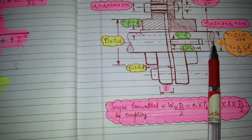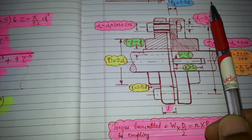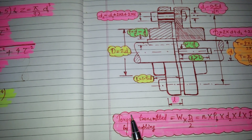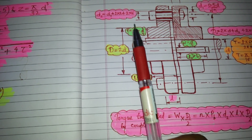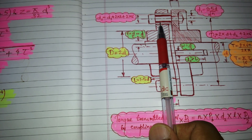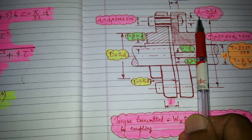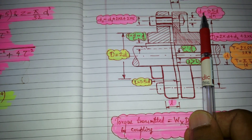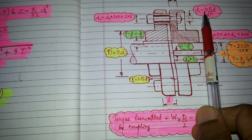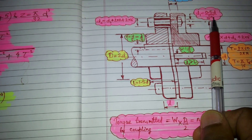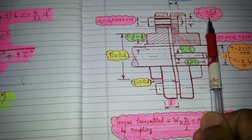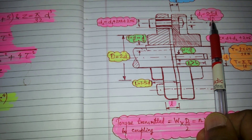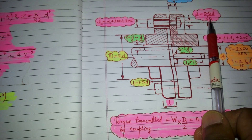Once we have the diameter of the shaft, we can calculate the dimensions related to the pin. The first thing we find is D1, the diameter of the pin, using the formula: D1 equals 0.5D divided by the square root of N, where D is the diameter of the shaft and N is the number of pins.